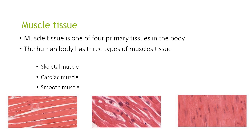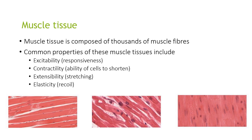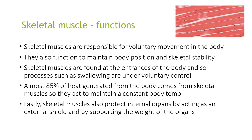Muscle tissue is one of the four primary tissues in the body. The human body has three types of muscle tissue: skeletal, cardiac and smooth. Muscle tissue is composed of thousands of muscle fibres, and common properties include excitability, contractility, extensibility and elasticity. Skeletal muscles are responsible for voluntary movement in the body and also function to maintain body position and skeletal stability. They are found throughout the body and control processes such as swallowing. Almost 85% of heat generated by the body comes from skeletal muscles, so they help maintain a constant body temperature. Skeletal muscles also protect internal organs by acting as an external shield and supporting the weight of the organs.